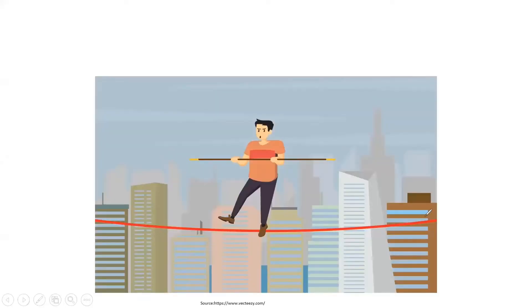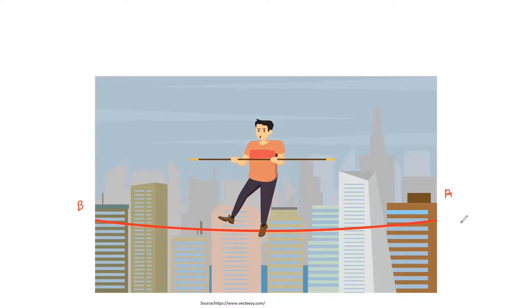Hey guys, welcome back to SFTC Quest. In this class, let's explore one more Apex concept that might come in handy when you're writing your code. Imagine you're walking on a wire between building A and building B — these buildings are 20 stories high. Even though you have a pole for balance, you'd still be worried: what if I fall down, what if something goes wrong, what if I lose balance?